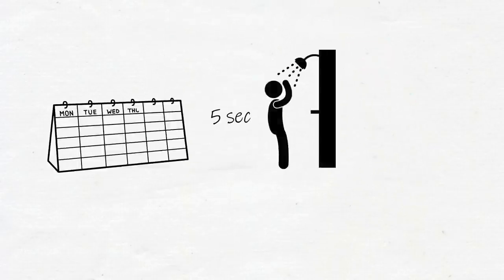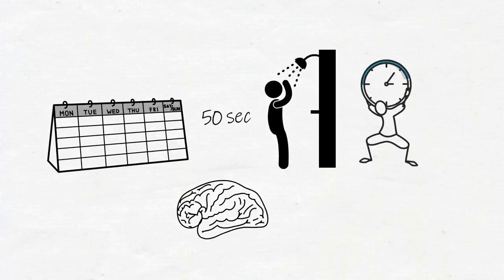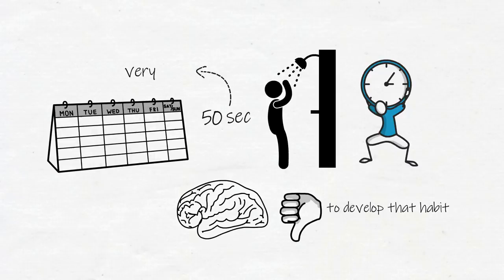I just needed to do 5 seconds of cold water at the end of every shower for a few weeks to train my brain to want cold water at the end of a shower. If I had forced myself to do 50 seconds of cold water every time I showered, it would have taken the same amount of time to develop that desire to hit myself with cold water, but it also would have made me far less likely to develop that habit because 50 seconds of cold water is very hard.